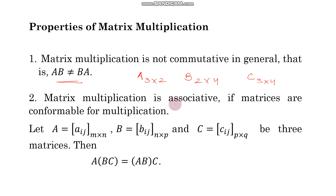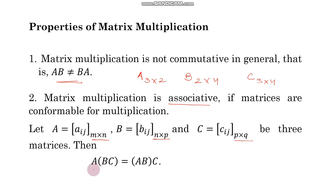Matrix multiplication is associative. If three matrices have compatible orders — A is M by N, B is N by P, and C is P by Q — then you can multiply A with B and B with C. The associative law says A(BC), where you first find BC then multiply with A, equals (AB)C, where you first find AB then multiply by C. So matrix multiplication satisfies the associative law.